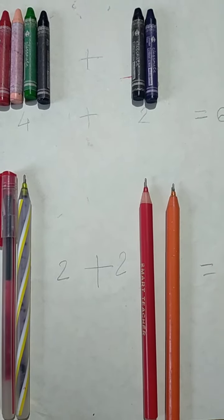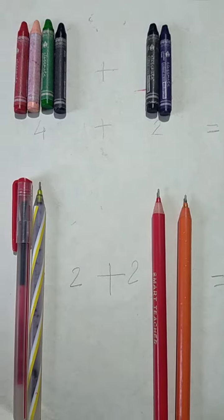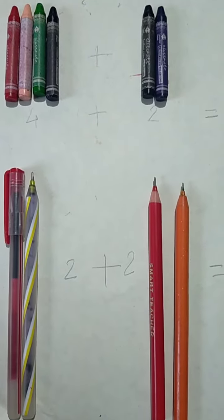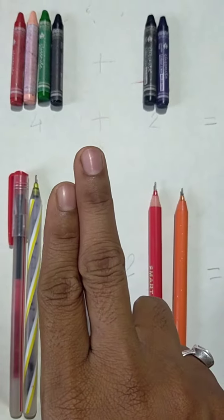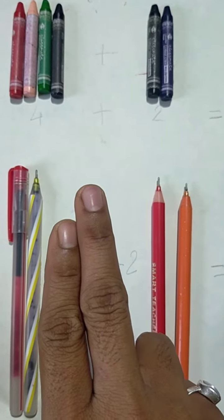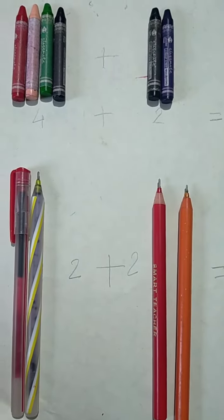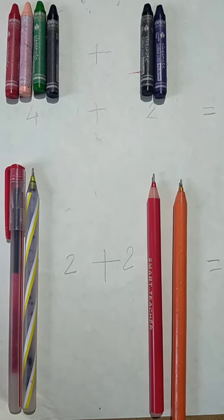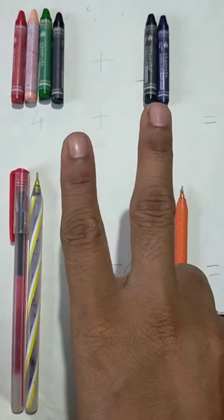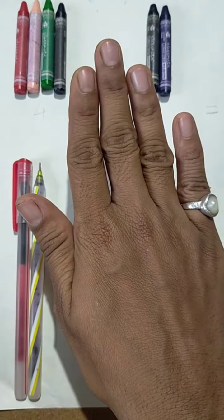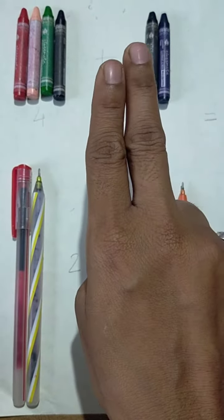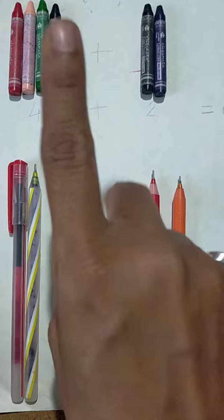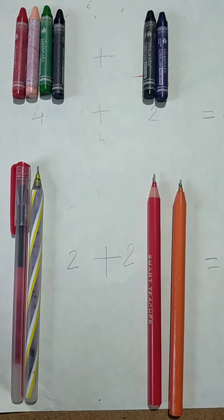For example, you have 2 chocolates and you have 5 chocolates. So, 2 plus 5 is equal to 7. We have 2. We have 5 fingers. So, in 5 we will add 2 fingers. So, 5, 6 and 7. Okay? So, we have learned the addition.